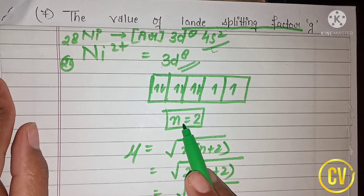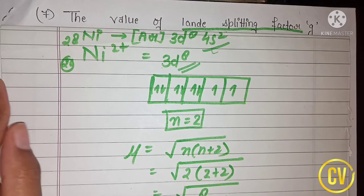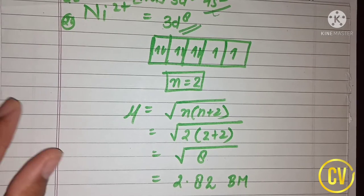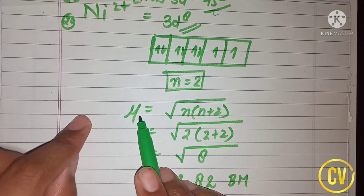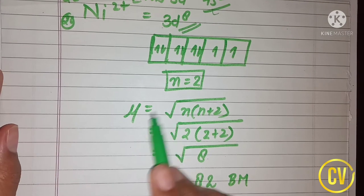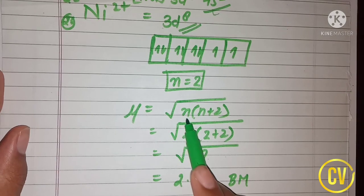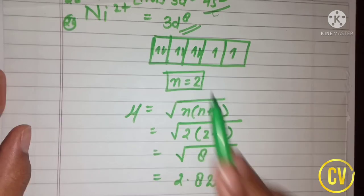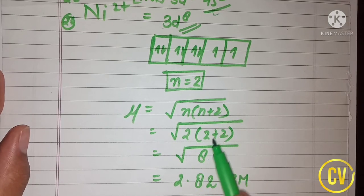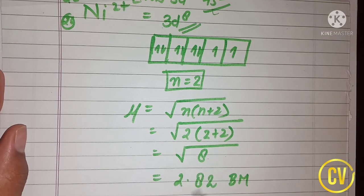So the number of unpaired electrons n = 2. Putting this into the formula μ = √(n(n+2)) = √(2(2+2)) = √8 = 2.82 Bohr magnetons. That is the magnetic moment for Ni²⁺.